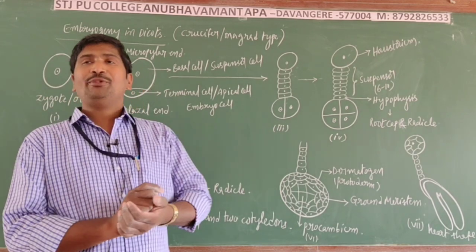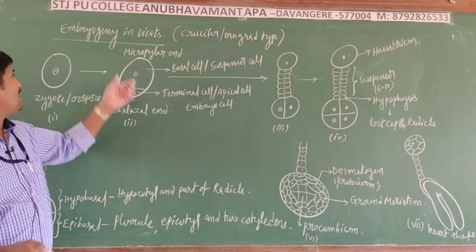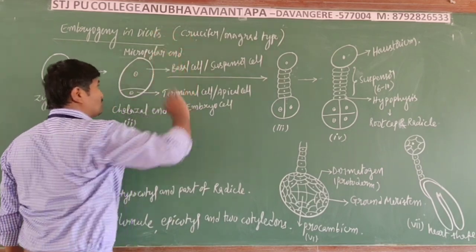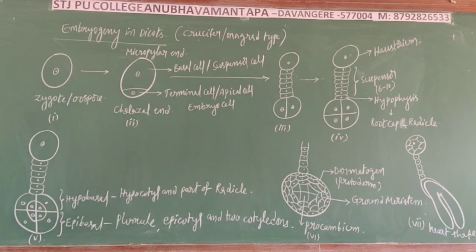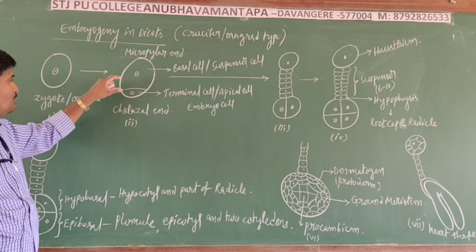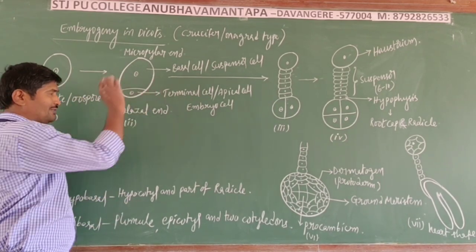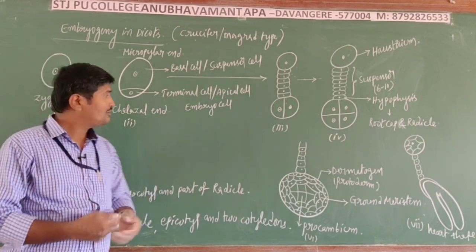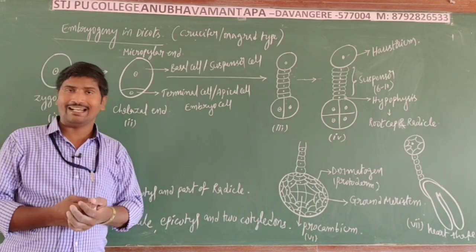Embryogeny is the development of embryo from the zygote. In dicots, the common type is the crucifer (Hanstein) type. The zygote or oospore undergoes unequal mitotic cell division, forming two cells: a large basal cell towards the micropylar end, and a small terminal (apical/embryonal) cell towards the chalazal end.